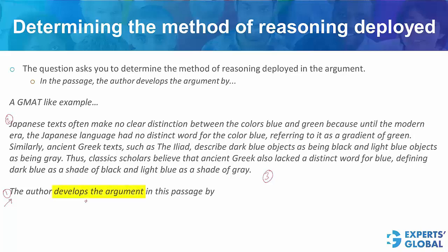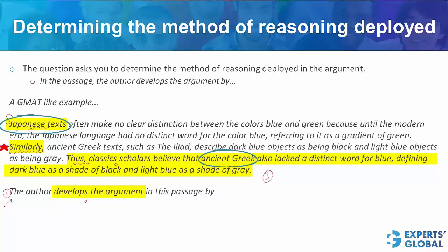The author develops the argument in this passage by doing what? The author talks about Japanese text here, and then — this is the keyword — 'similarly.' The third part is the conclusion: 'thus, something.' So, on the basis of Japanese texts, something has been concluded about the Greek texts. How has the author developed his argument? He has done so by showing similarity with something else. The buzzword or buzz phrase we require in the correct answer choice is something on the lines of 'showing similarity' or 'drawing analogy.'